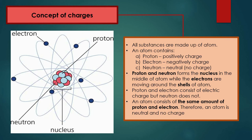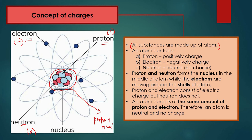Before we enter the topic of electricity, we need to understand the concept of charges. All substances are made up of atoms. An atom contains protons, electrons, and neutrons. Protons are positively charged, electrons are negatively charged, and neutrons have no charge. Every atom has a nucleus consisting of protons and neutrons, and electrons flow in shells or orbits surrounding the nucleus.